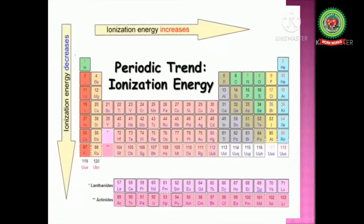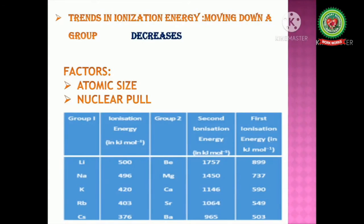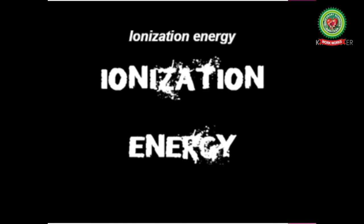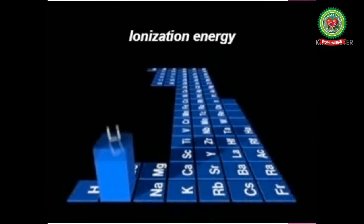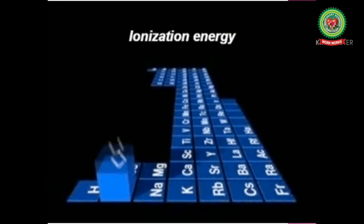Now we will discuss about the trend in ionization energy while moving down a group and while moving across a period. Ionization energy increases while moving across a period, and decreases while moving down a group. As we move down a group, ionization energy decreases.